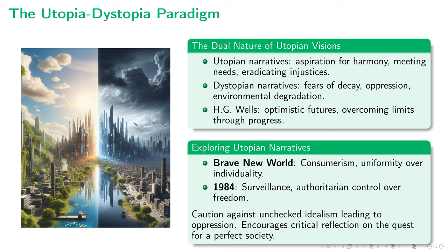Turning our eyes to literature, we find contrasting yet insightful examples. Brave New World depicts a society steeped in consumerism, valuing the uniformity of the masses over individuality. Meanwhile, 1984 ushers us into a surveillance-driven society where authoritarian control reigns supreme, dangerously curbing freedoms. These narratives shine a light on the societal and psychological implications of reaching for utopia. They warn us against unchecked idealism and unbridled desire for perfection, emphasizing the delicate balance between the quest for an ideal society and the dread of creating a dystopia.